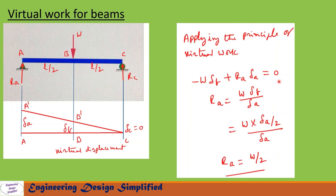So: -W × delta_B + RA × delta_A = 0. From this equation RA = W × delta_B / delta_A. Since delta_B = delta_A / 2, substituting and simplifying gives RA = W/2. So both RC = W/2 and RA = W/2.